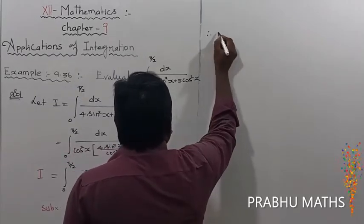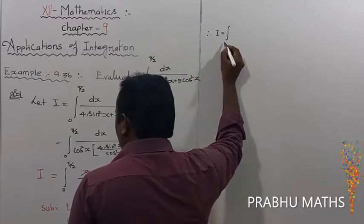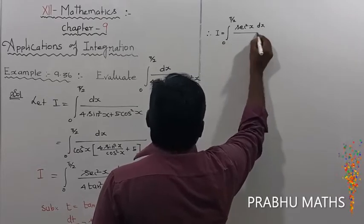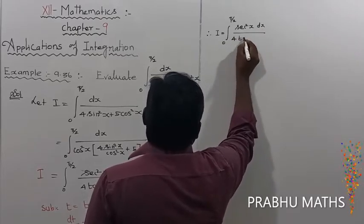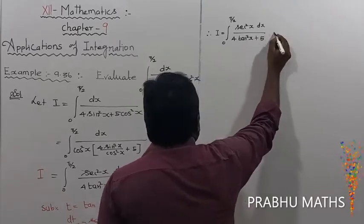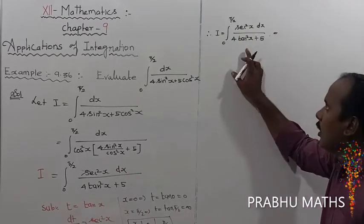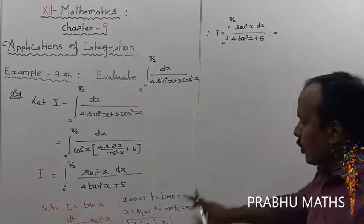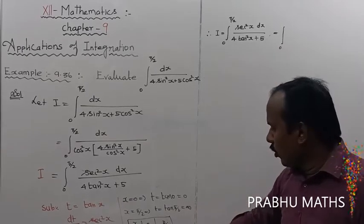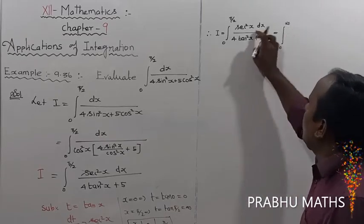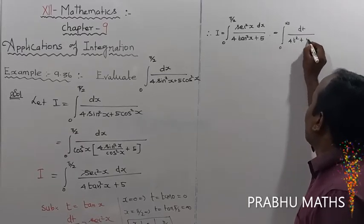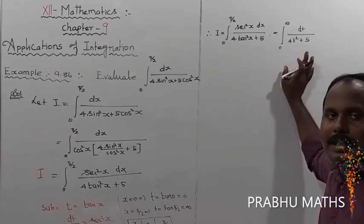Therefore I equals the integral from 0 to infinity of dt divided by 4t² plus 5. This is now called an improper integral since the upper limit is infinity.